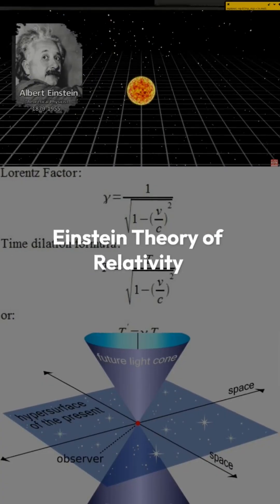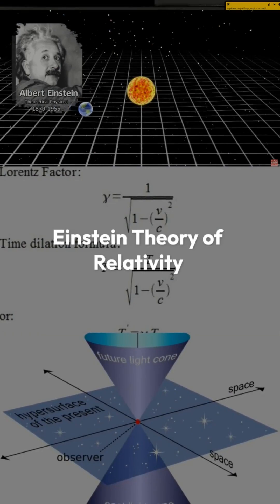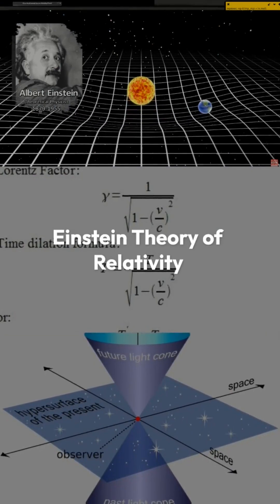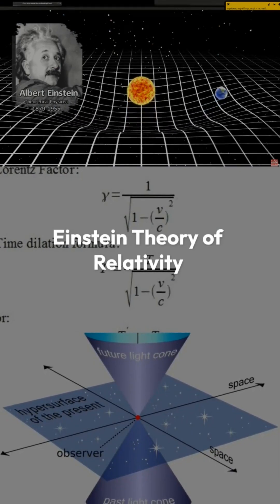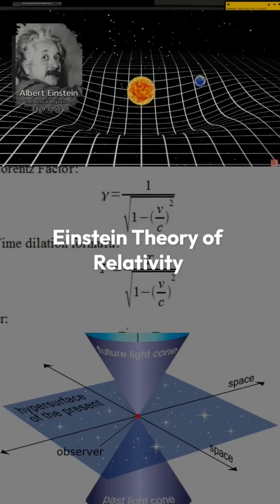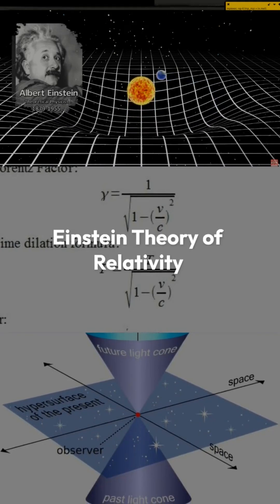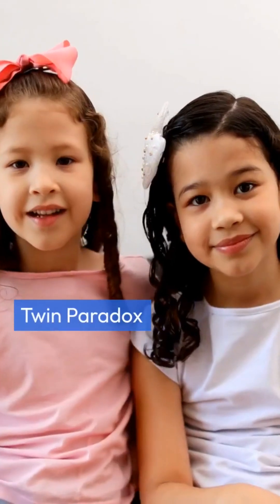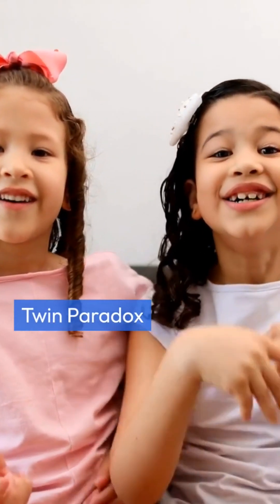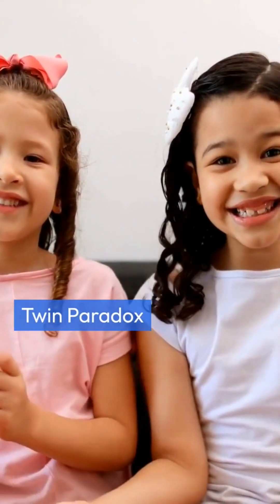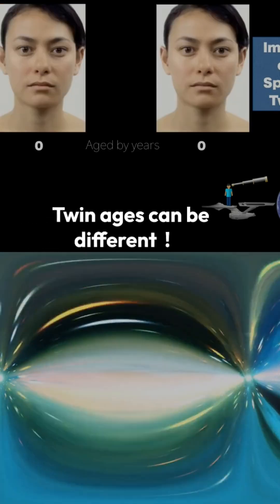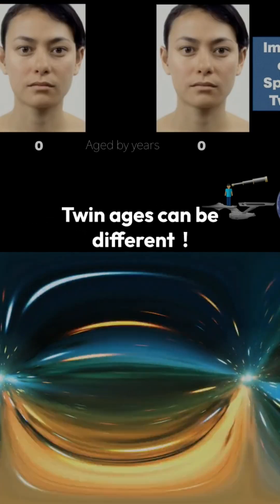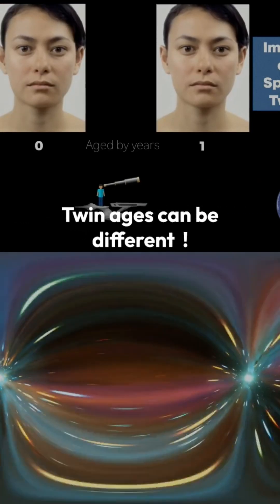Einstein's theory of relativity states that the speed of light is constant and time slows down for objects in high gravity or traveling at high speeds, leading to phenomena such as the Twin Paradox. One twin ages slower than the other when traveling at 90% the speed of light.